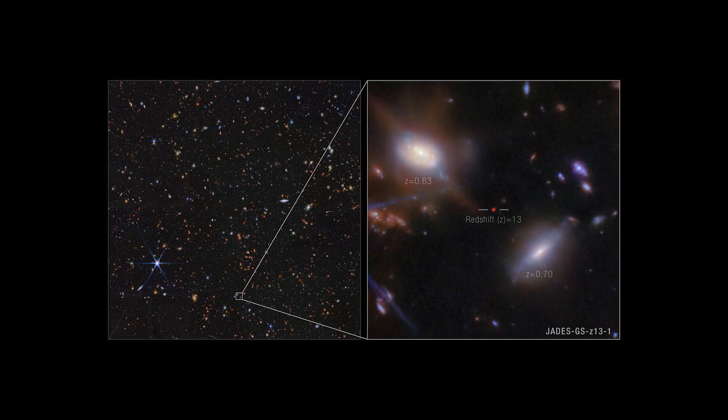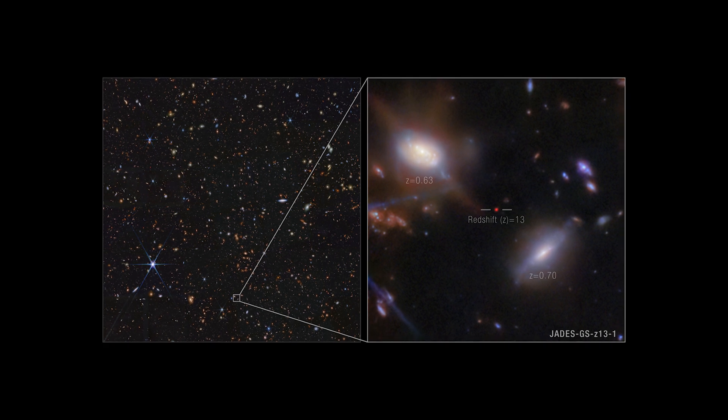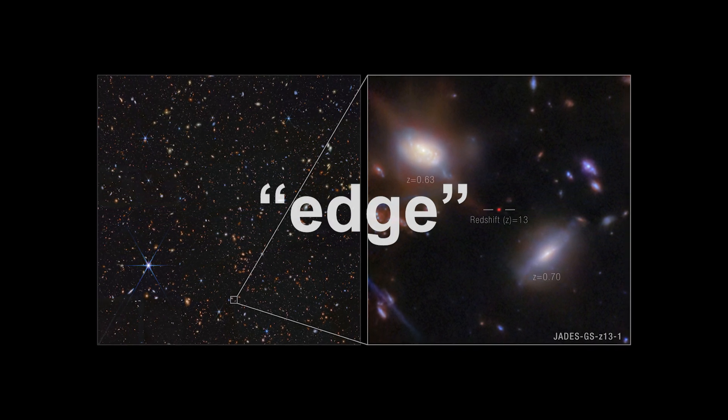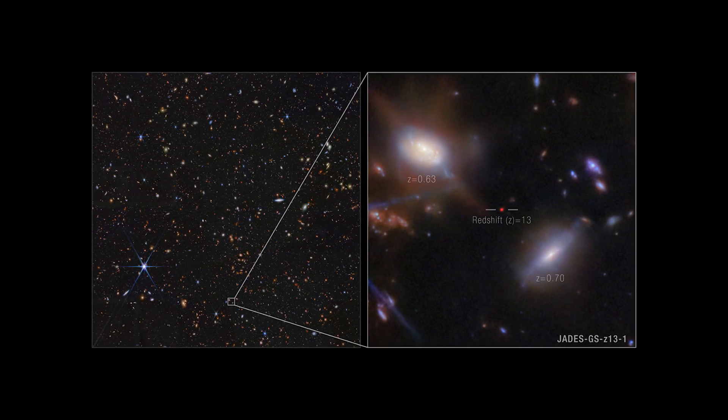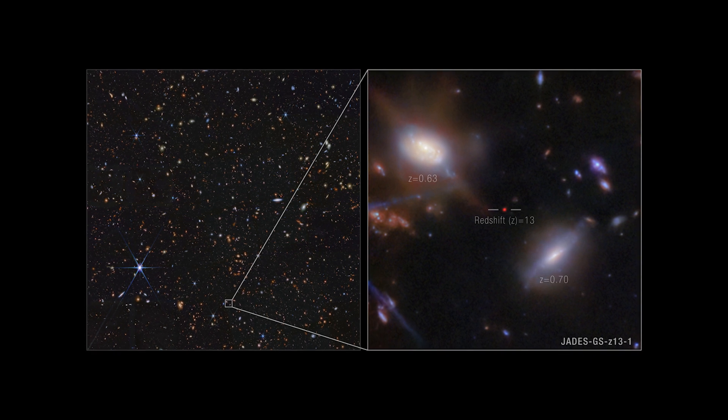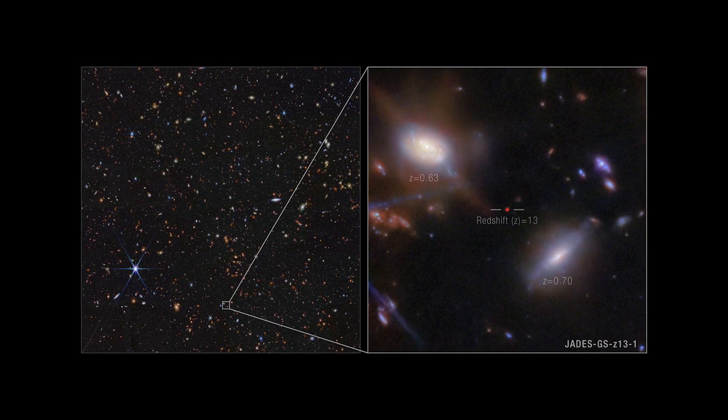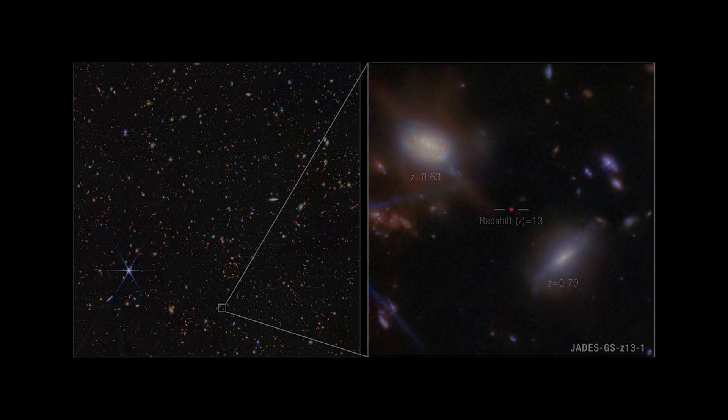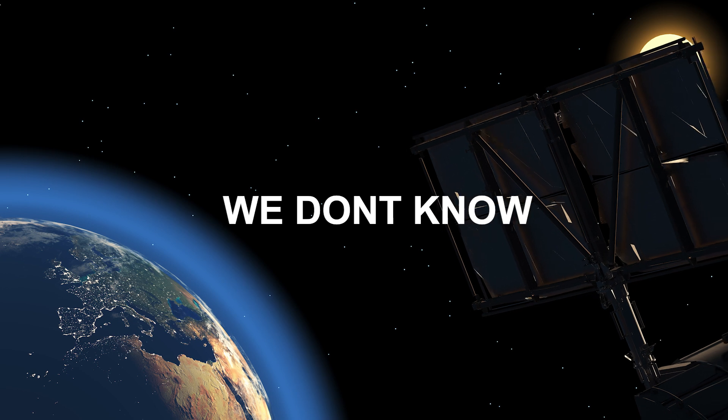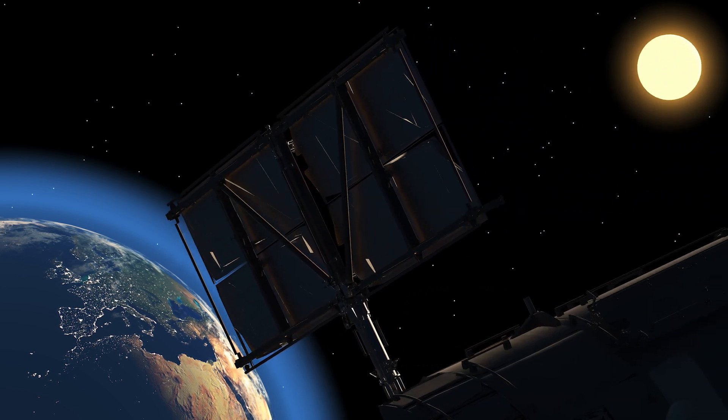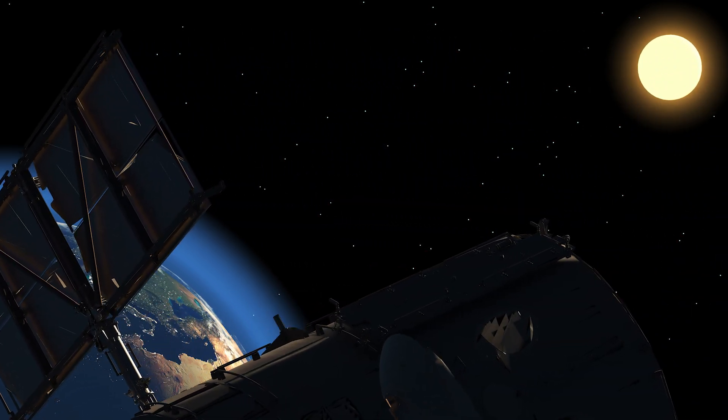The further we look, the faster things appear to move away. That means the edge of our universe isn't really an edge, it's a horizon, a limit. The farthest point from which light has had time to reach us since the Big Bang. And beyond that, we simply don't know. Not because there is nothing there, but because the light hasn't arrived yet.